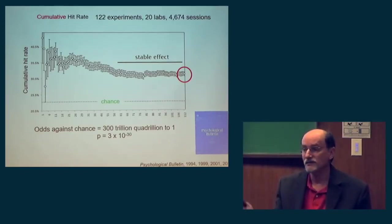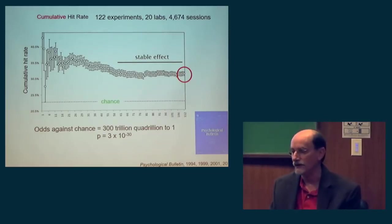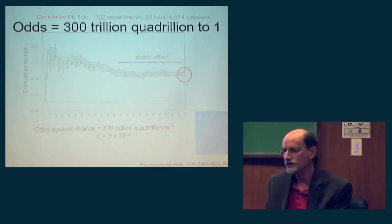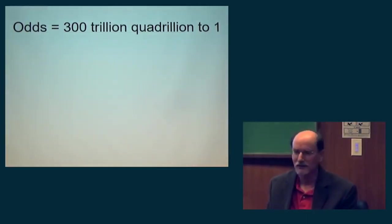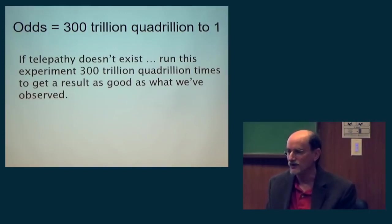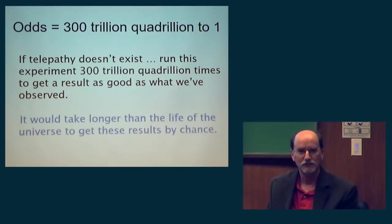Because this is mostly composed of ordinary people, it suggests we're dealing with a human ability which is mostly unconscious. It's there, you can evoke it in the laboratory to a small extent, but it's a real effect. So what does odds of 300 trillion quadrillion to one actually mean? It means that if telepathy doesn't exist, we could run this experiment 300 trillion quadrillion times to get a result as good or better. If you add up how much time it would take, it would be longer than the life of the universe.